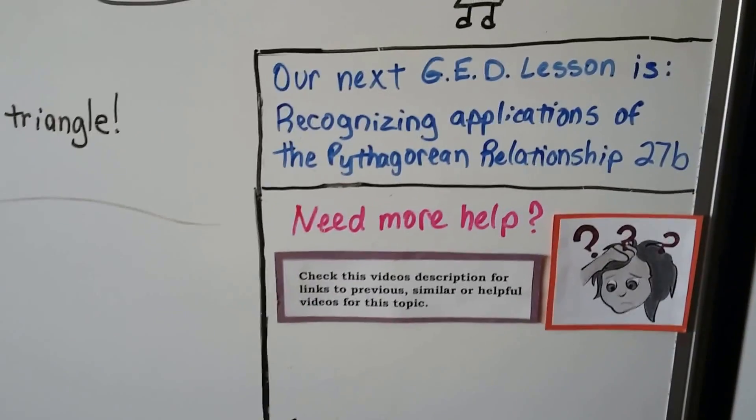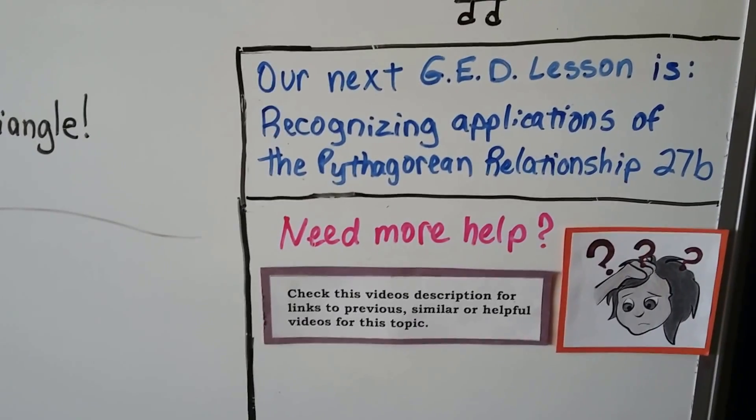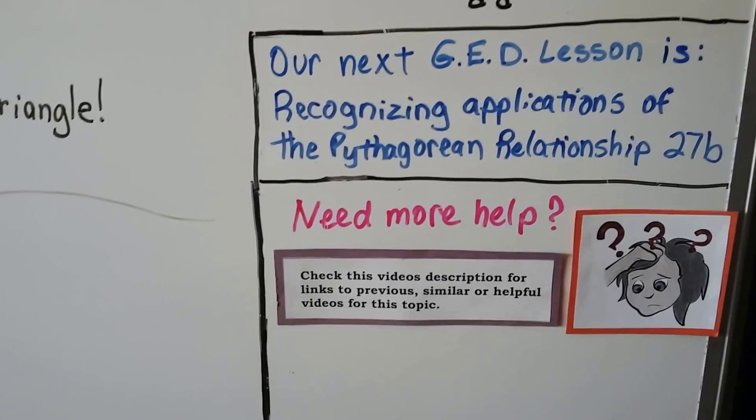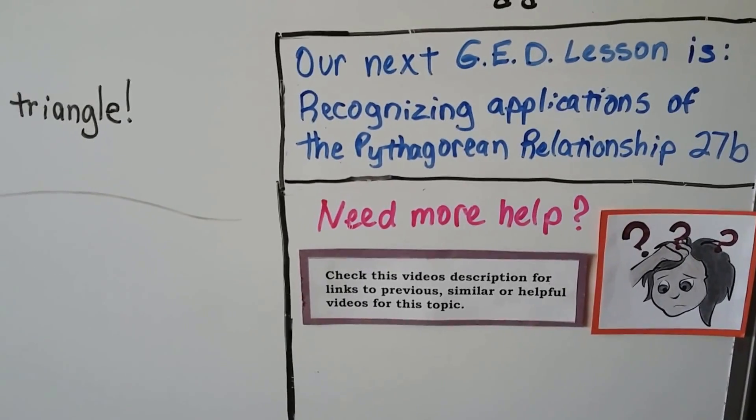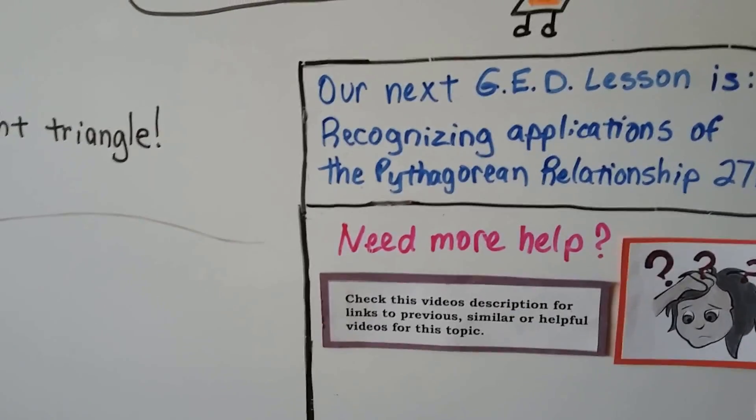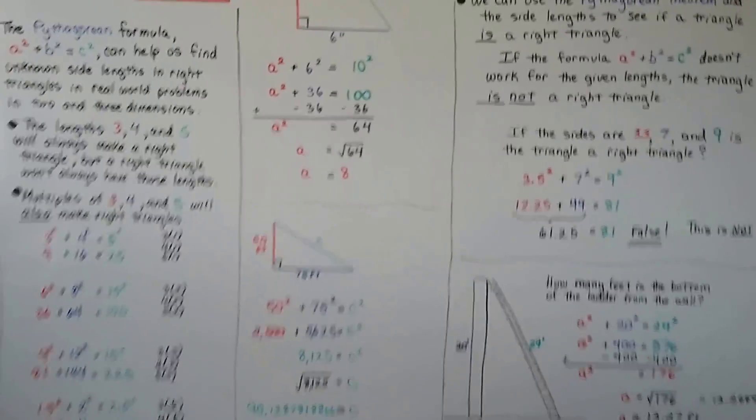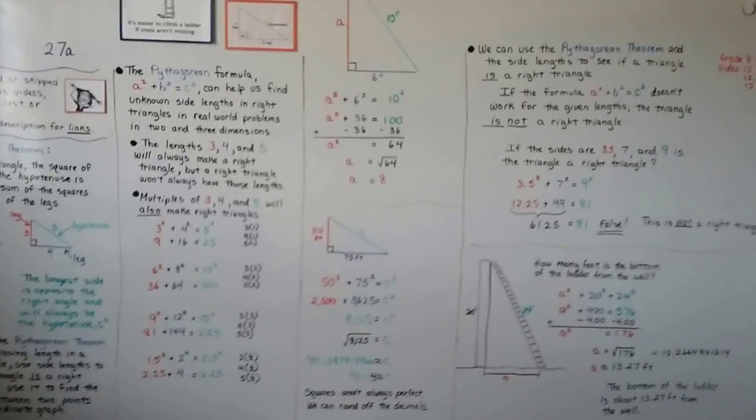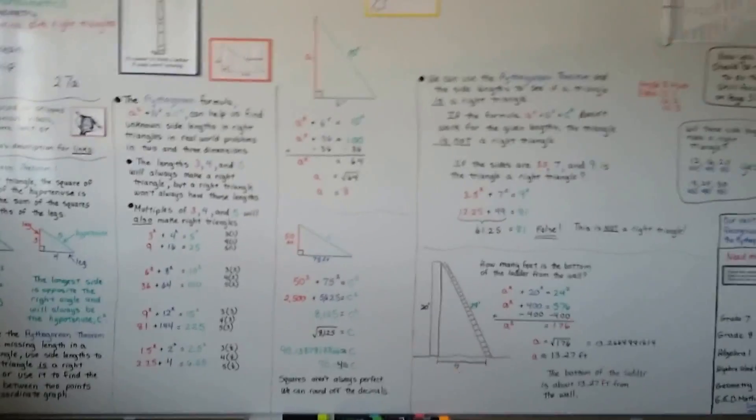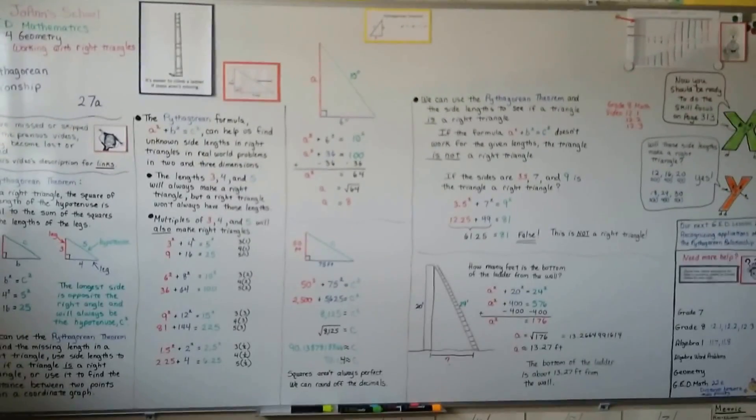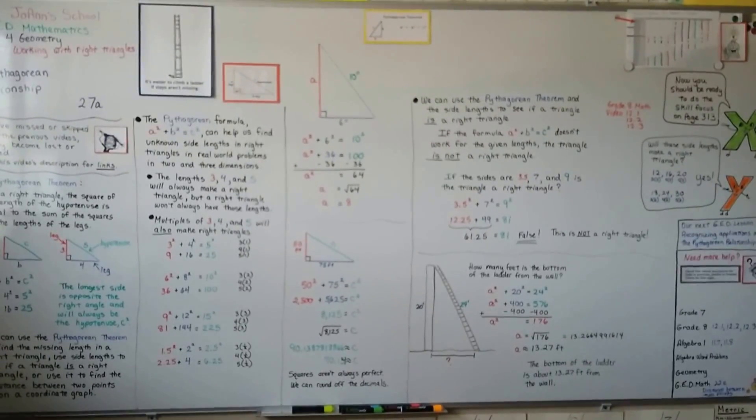So, our next video is going to be recognizing applications of the Pythagorean relationship, video 27b. We're going to talk about using the Pythagorean theorem in real life to solve real-world problems. And, of course, there's going to be word problems in there. So, make sure you understand this a squared plus b squared equals c squared before you move on. So, keep your chin up. Keep trying. And, I'll see you next video. Bye!